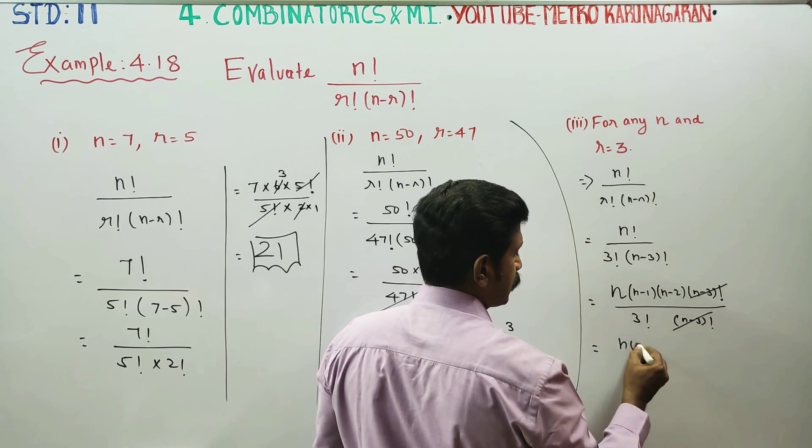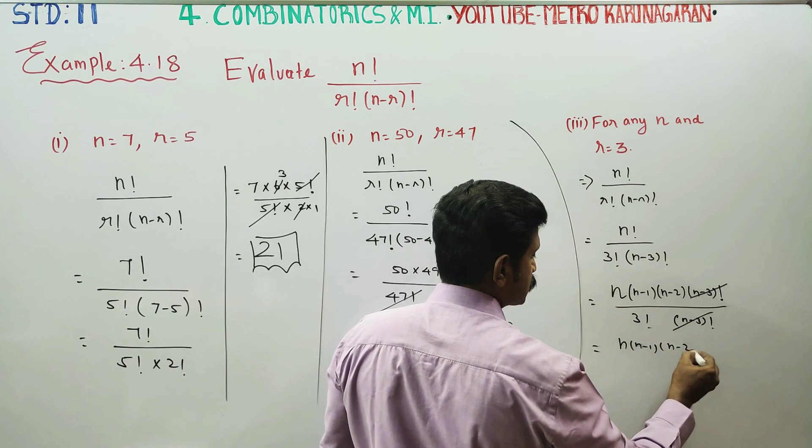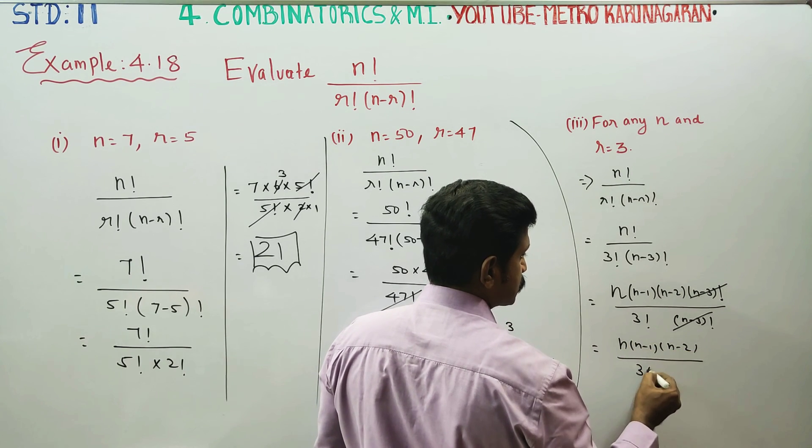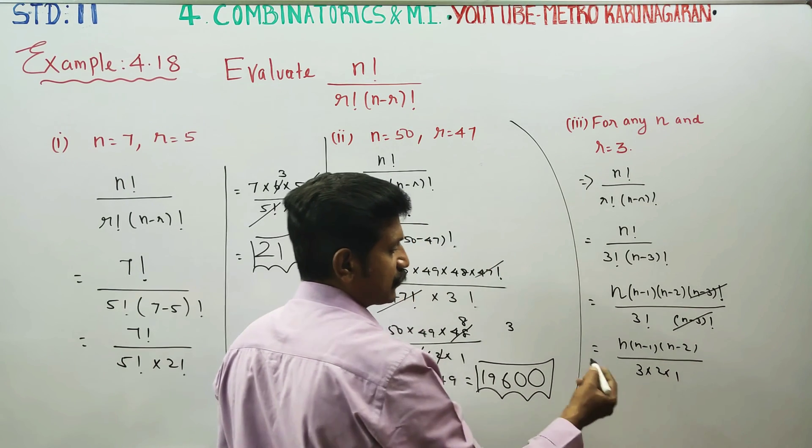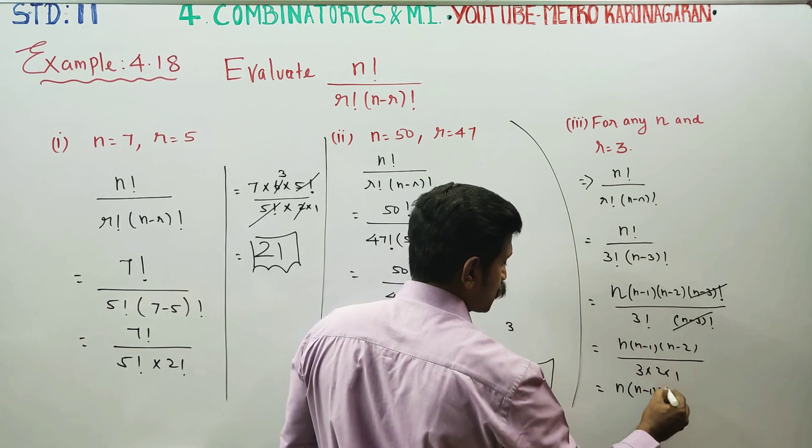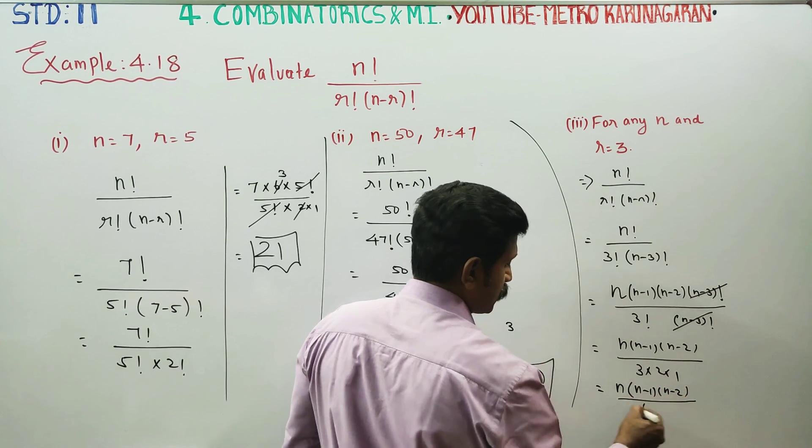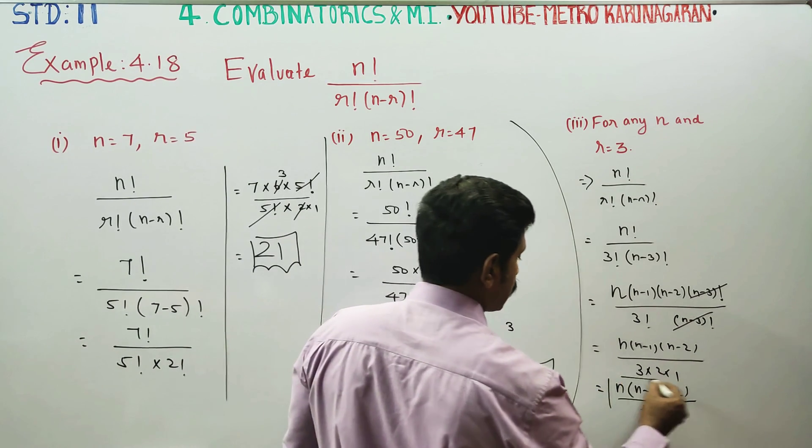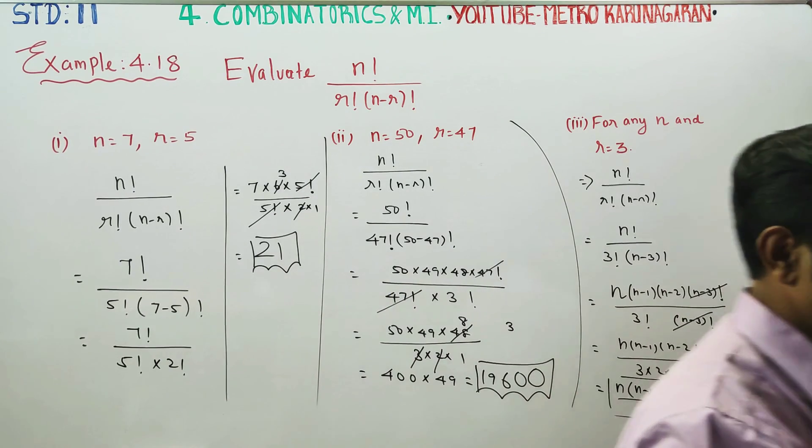The final answer will be n into n minus 1 into n minus 2, 3 factorial can be written as 3 into 2 into 1. The final answer will be n into n minus 1 into n minus 2 by 6 will be your final result for the third subdivision sum.